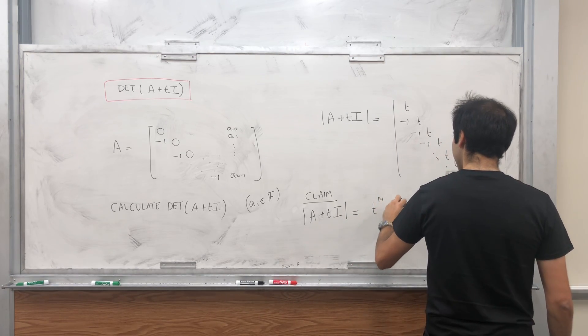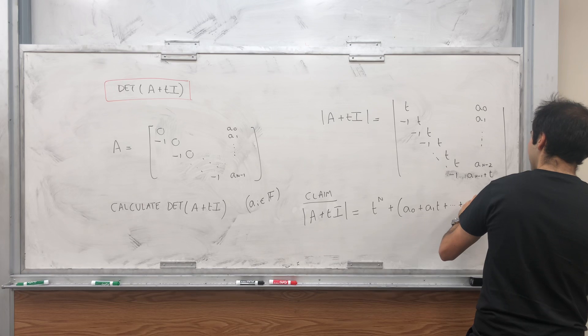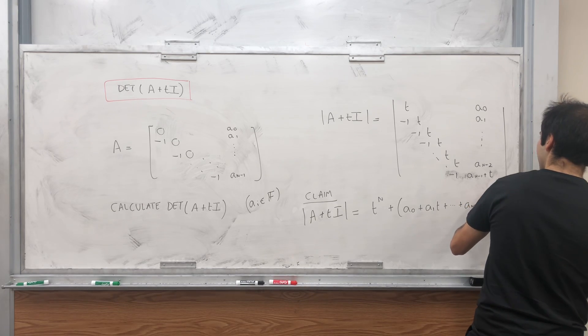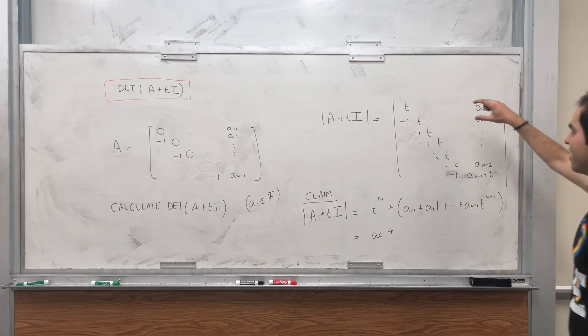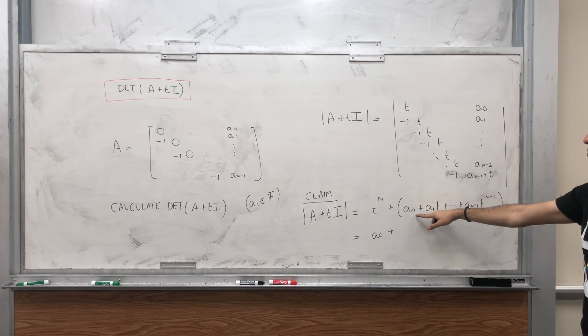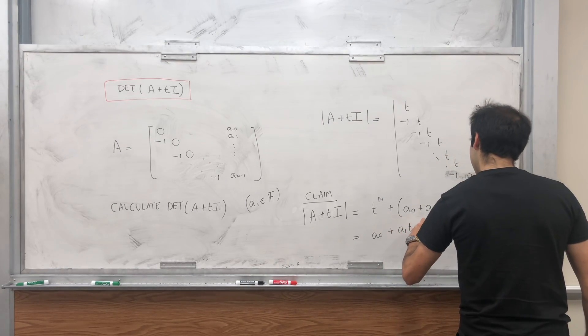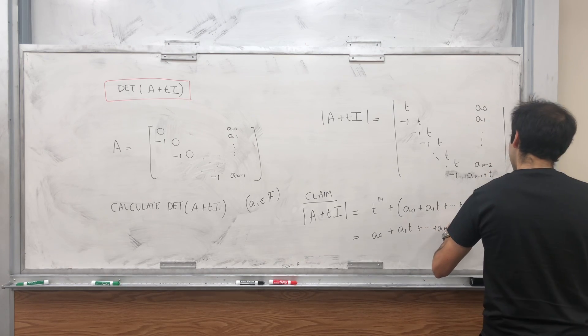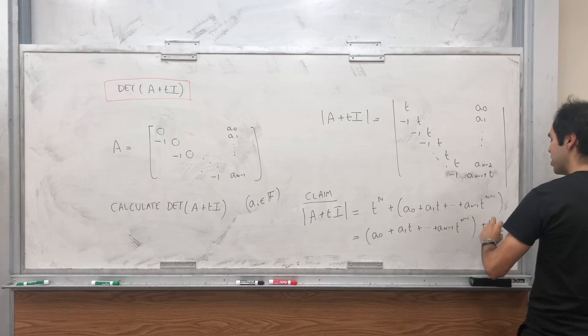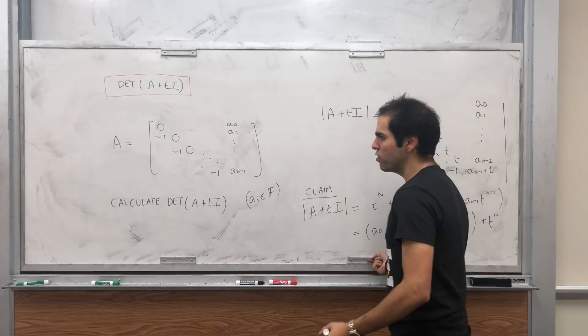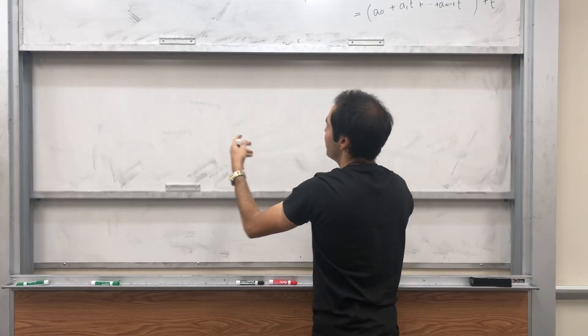I'm claiming that the determinant of A plus TI is simply the following: it's T^n plus A_0 plus A_1*T plus dot dot dot plus A_{n-1}*T^{n-1}. So in other words, it's almost like the matrix whose polynomial is A_0 plus A_1*T plus A_{n-1}*T^{n-1}, except the last one isn't A_n*T but just T^n.